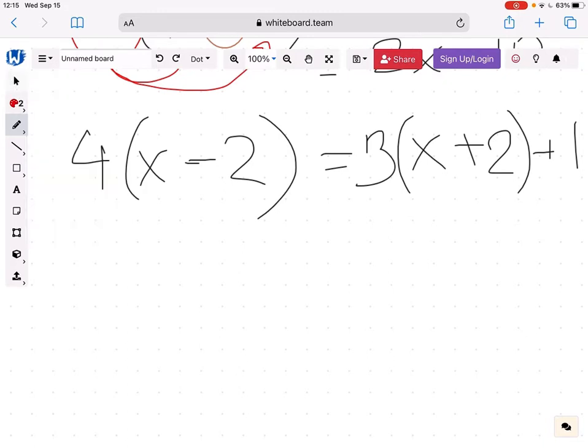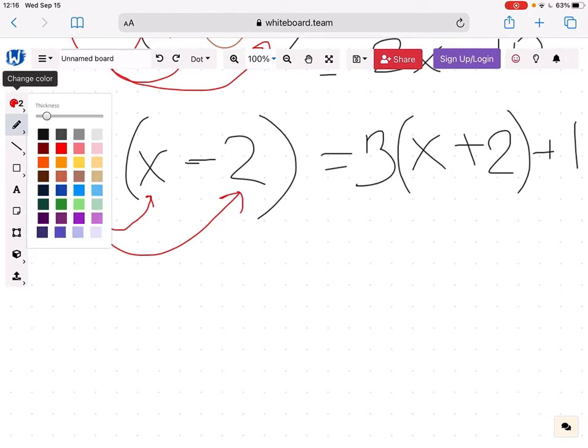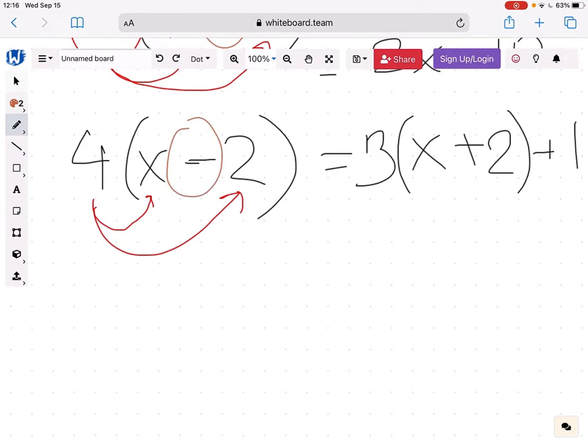So what am I going to do? On the left-hand side, I multiply 4 by x and by 2. And please don't forget that there's minus here. So what I'm having is 4x minus 4 times 2, which is 8. That's what I have on the left-hand side.